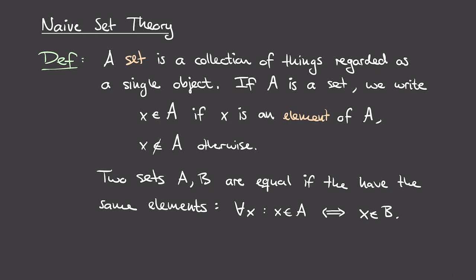We'll start out by informally defining what a set is. A set is a collection of things that we regard as a single object. You can think of a set as a sort of bag or container that has a bunch of stuff in it, while the set is this bag or container itself.